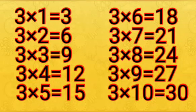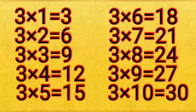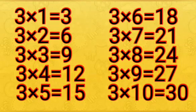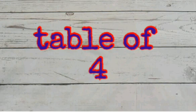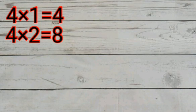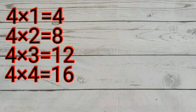Let's recapitulate again. 3 ones are 3, 3 twos are 6, 3 threes are 9, 3 fours are 12, 3 fives are 15, 3 sixes are 18, 3 sevens are 21, 3 eights are 24, 3 nines are 27, 3 tens are 30.